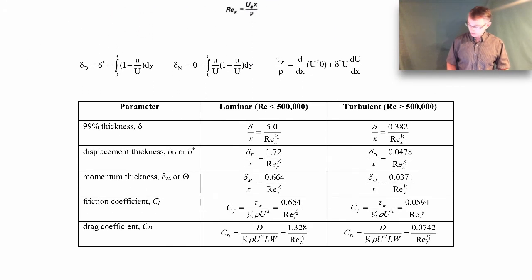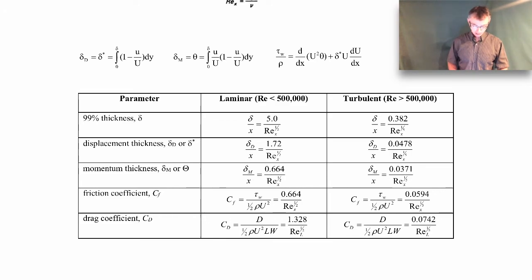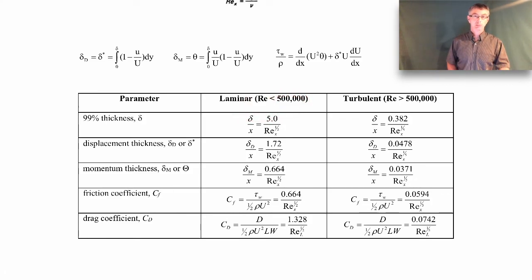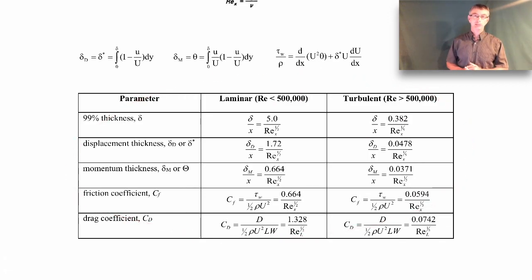Finally, there's a table summarizing all of the equations we'll use — laminar boundary layer expressions from the Blasius solution, and turbulent boundary layer expressions using the less accurate textbook correlation. For a laminar boundary layer, the expressions are used when the Reynolds number is less than 500,000. When the Reynolds number is greater than 500,000, we use the turbulent expressions. Take a look at some of the examples posted to see how we use these expressions.